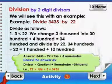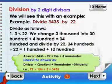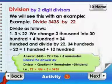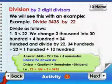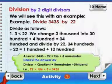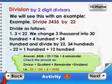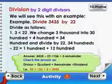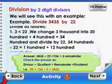Division by two-digit divisors. We will see this with an example. Divide 3435 by 22. Divide as follows: 3 is lesser than 22.